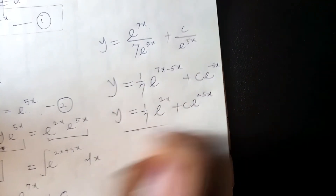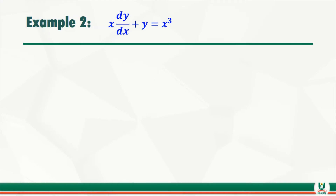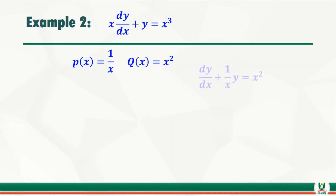Now let's solve: x·dy/dx + y = x³. Looking at this equation, I must use the integrating factor method. I first need to find p(x). Make sure dy/dx has no coefficient — divide both sides by x. This gives dy/dx + (1/x)·y = x². So p(x) = 1/x and k(x) = x².